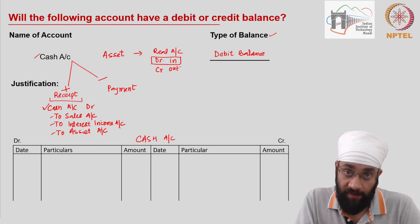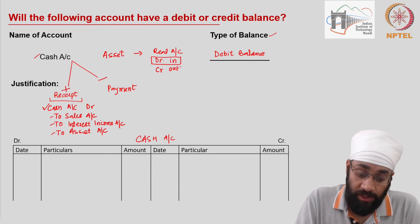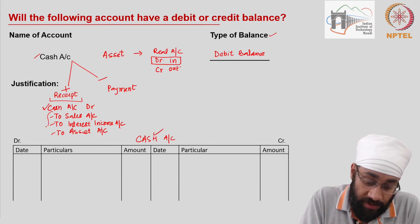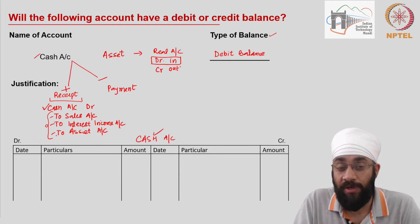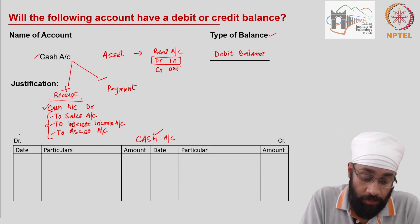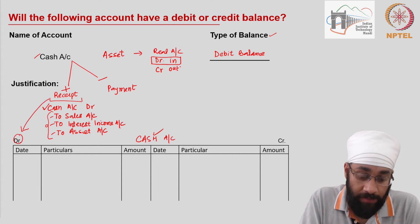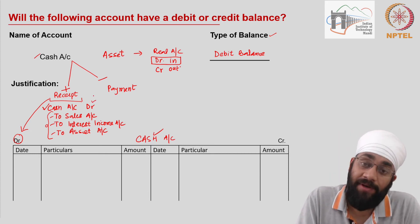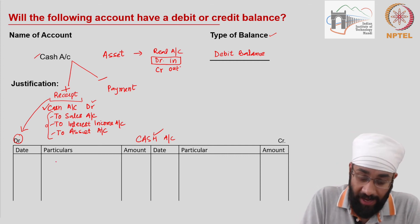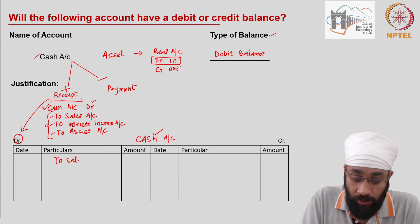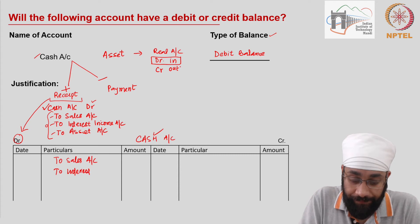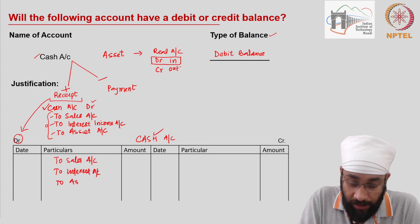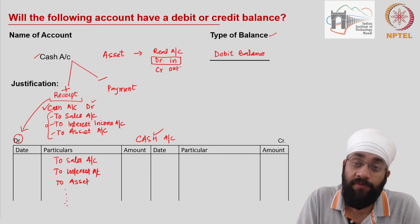We've established this using the principles of the double-entry system. When you prepare the cash account, all transactions which are receipts — reasons for cash coming into the business — are going to be written on the debit side. All receipts go to the debit side because in all transactions involving receipts, cash account is debited. So on the debit side of the cash account you write all the accounts due to which cash is coming in: to sales, to interest earned, to any asset being sold, or any other type of income.